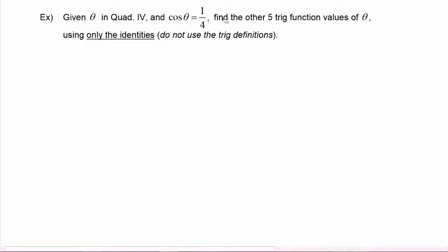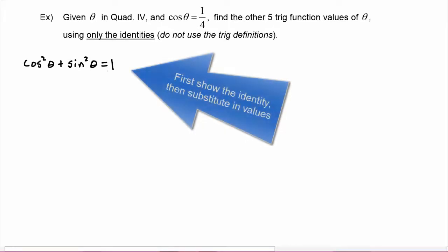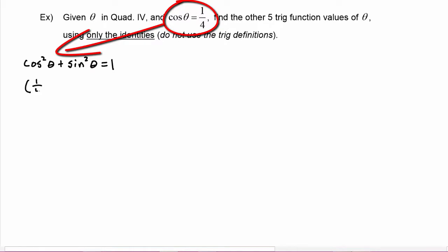Once you know cosine of theta, it's easy to find sine of theta because we have an identity: cosine squared of theta plus sine squared of theta is equal to one. We can plug in the value we have for cosine, which is one fourth, giving us one fourth squared plus sine squared of theta equals one.